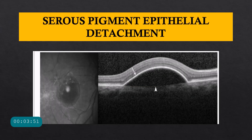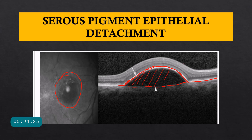Now look at this PED — it has a dome shape with a nicely elevated RPE separating from the underlying Bruch's membrane. The zone beneath is optically empty and Bruch's membrane is visible below. This is a serous pigment epithelial detachment, which occurs in ARMD and especially wet ARMD. Over time Bruch's membrane becomes thickened and more hydrophobic, hampering the RPE's metabolic excretory function, so fluid cannot pass through into the choriocapillaries and accumulates in the sub-RPE space.